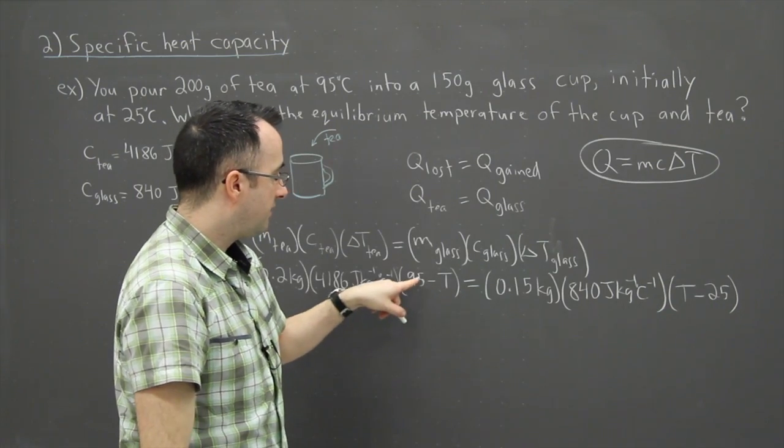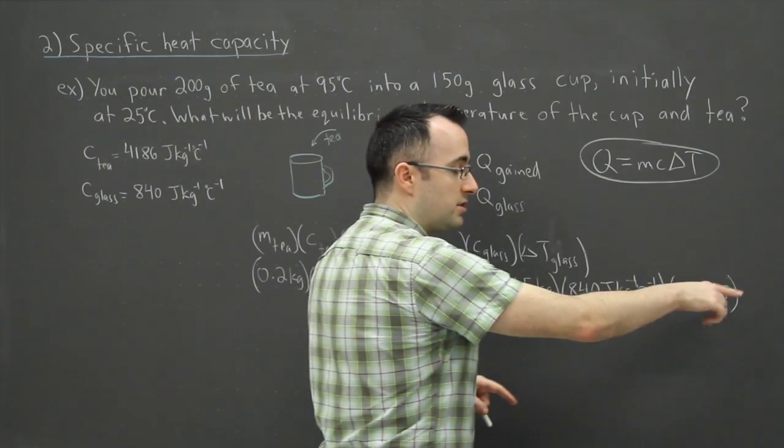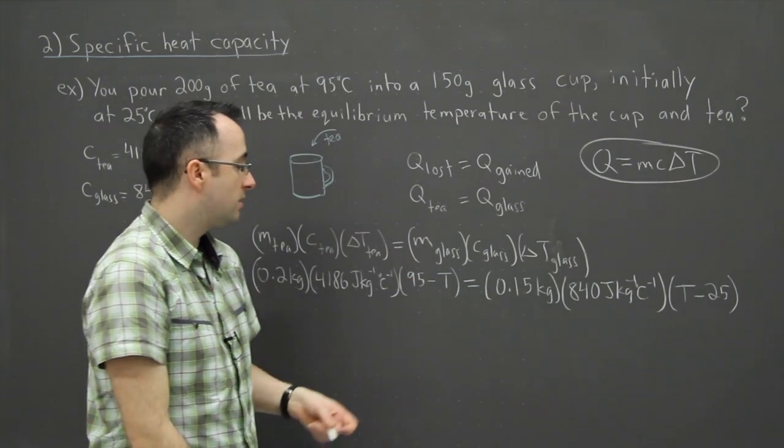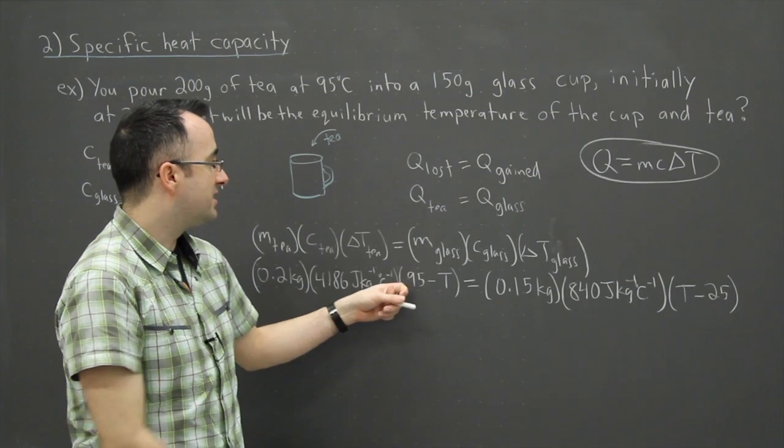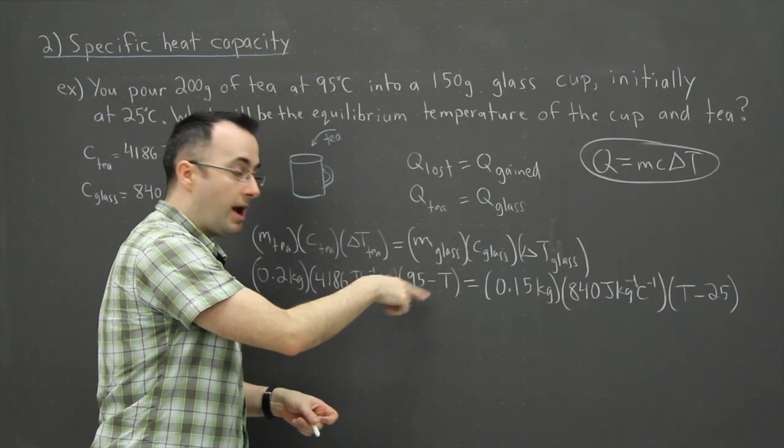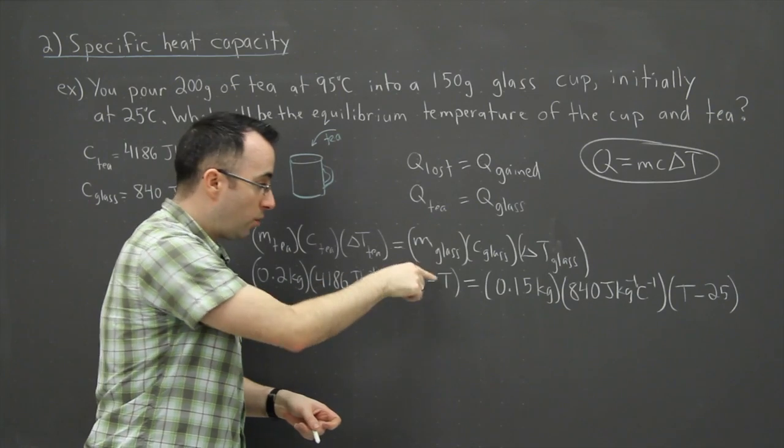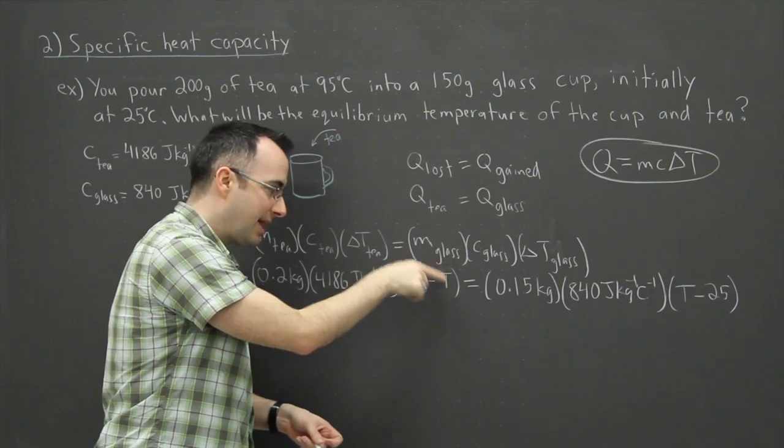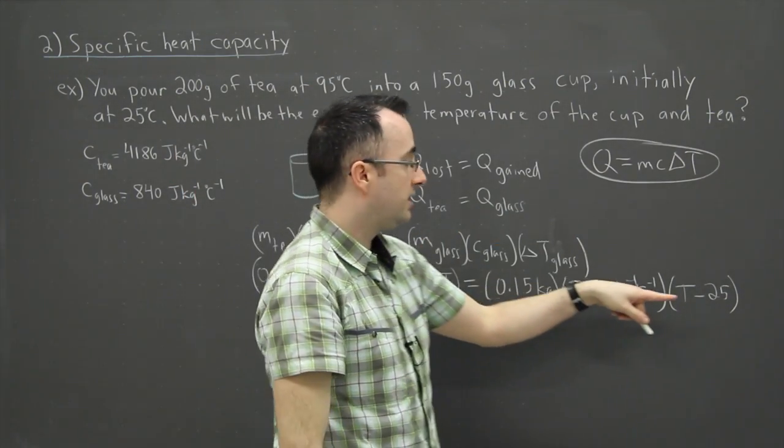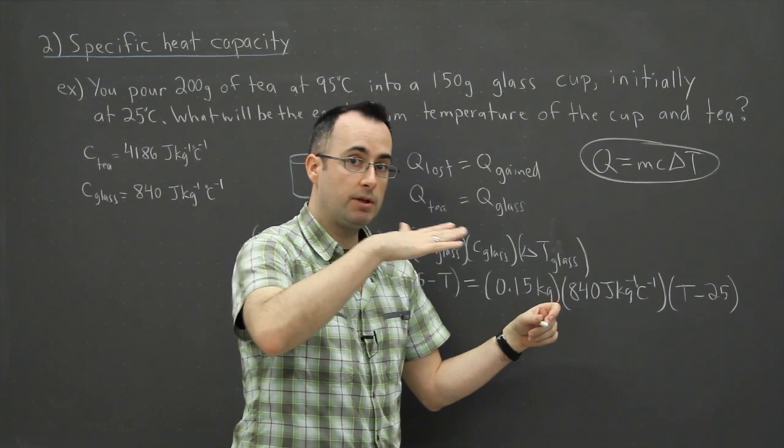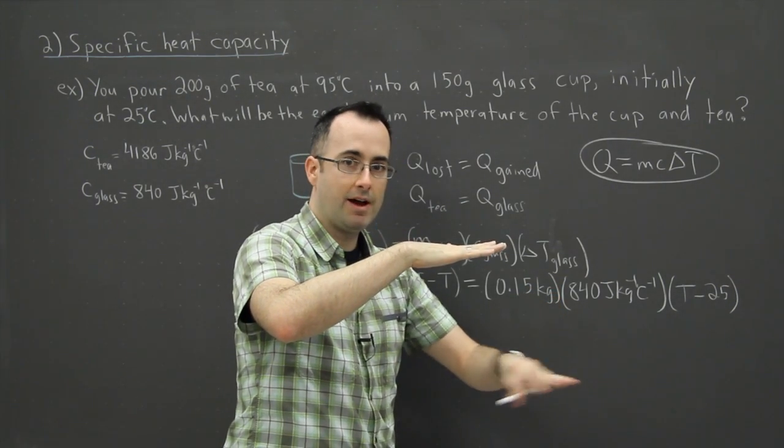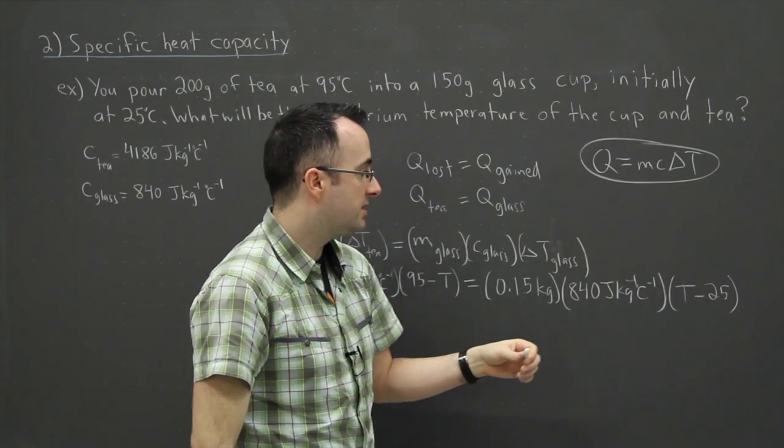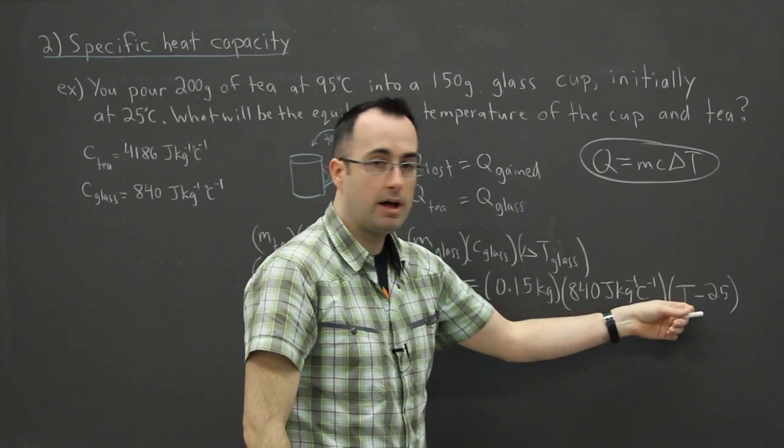By the way, these are degrees Celsius here. So if I do this, I have 95 minus T, and here I have T minus 25. It's important to have it that way. This one loses energy, so it starts off at some high temperature and goes down to a lower one. That lower one is the equilibrium one we're looking for. Conversely, over here we're gaining energy, which means the equilibrium temperature is higher than the 25 degrees it started at. For this glass, it starts off at 25, its temperature is going to go up.